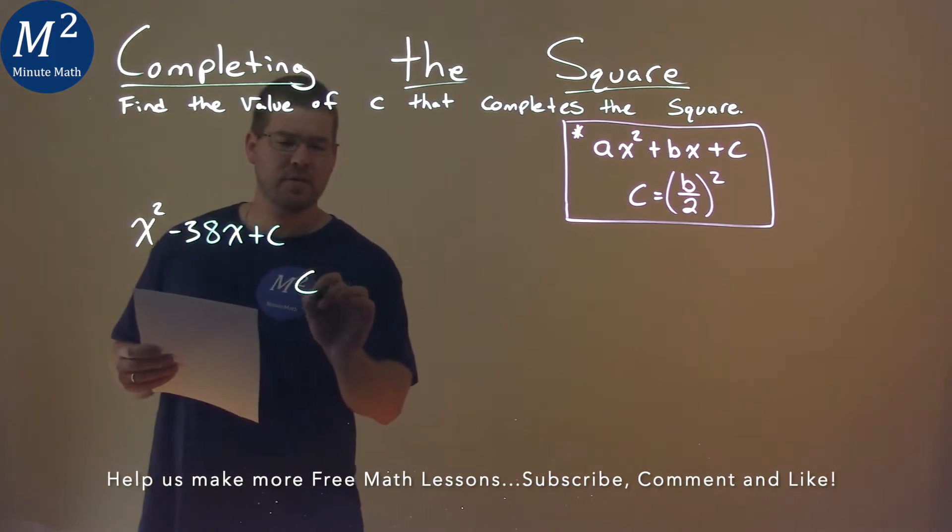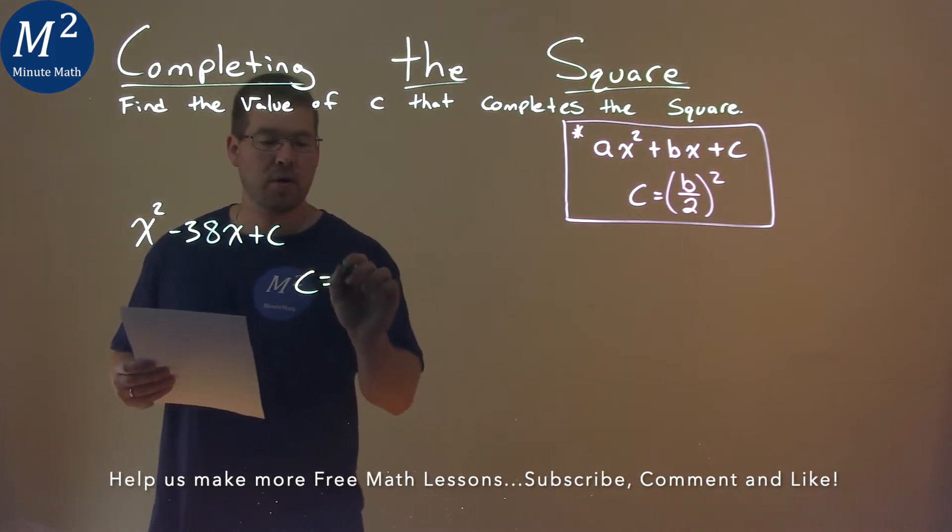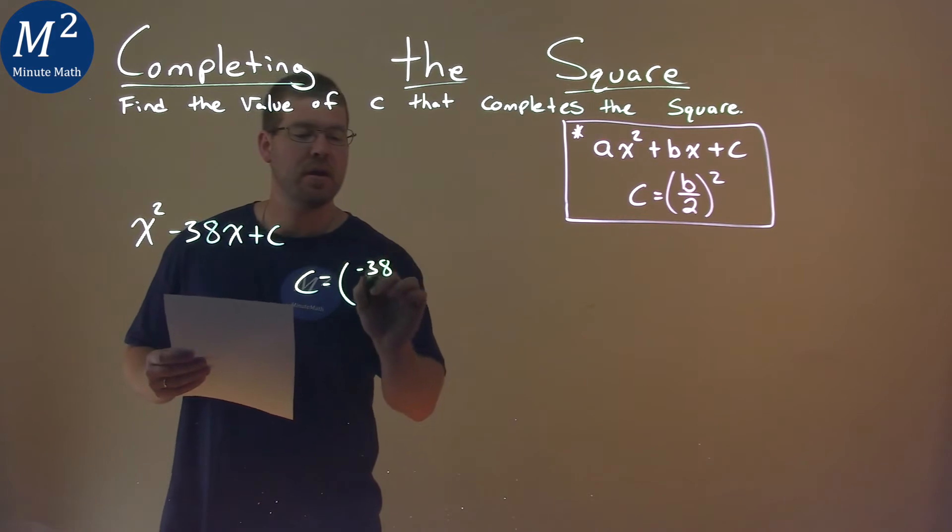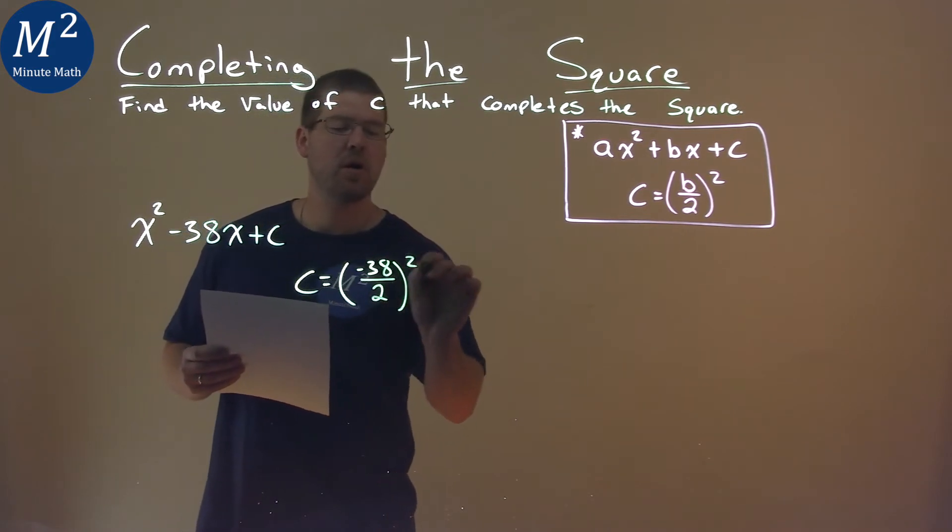Our formula tells us c needs to equal our b value, negative 38, divided by 2, all squared.